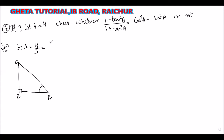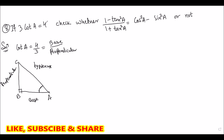The cot ratio is base by perpendicular. This is the hypotenuse, this is the perpendicular, and AB is the base. So the base is 4 units and the perpendicular BC is 3 units.